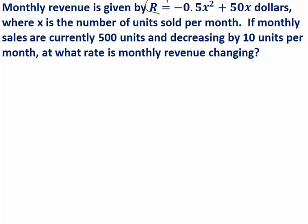It's this equation here, and that's going to be our starting point for our related rates calculation. So we have that R, which is changing over time, so it's really a function of t, is related to the number of units sold x, which is also changing over time, so it's a function of t, according to the formula R equals negative 0.5x squared plus 50x.